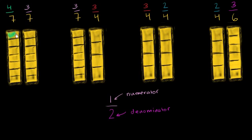So that's 1, 2, 3, 4. And the fact that even getting to 4 sevenths, I had to pass through 3 sevenths first, gives you a good clue that 4 sevenths is larger. Now let's color in 3 sevenths so we can compare: 1, 2, 3 sevenths. And it's pretty clear that on the left-hand side, we are shading in more of the whole than on the right-hand side. So 4 sevenths represents a larger fraction — more of the whole — than 3 sevenths.